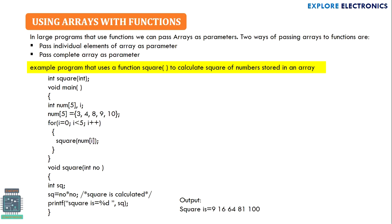Let's begin with using arrays with functions. We all know that we can send some data to a function and the function will calculate or do some computation on that data and send back the result. In the same way, we can also pass arrays as parameters to the function. Parameters are nothing but the data that we send to the function. There are two ways of passing arrays to functions.